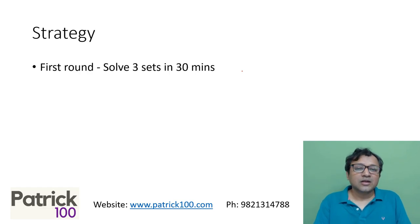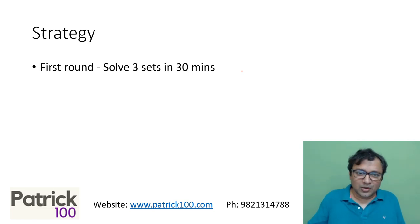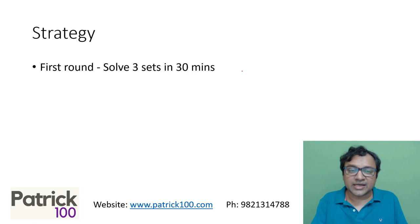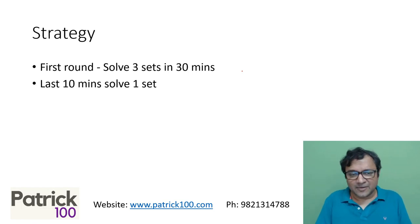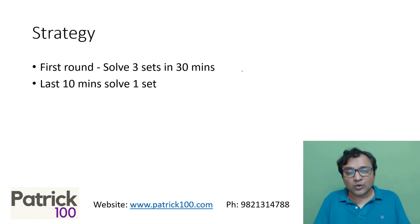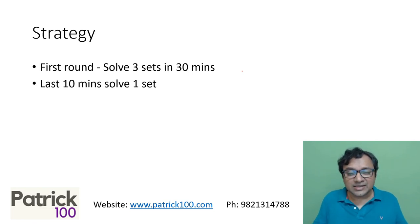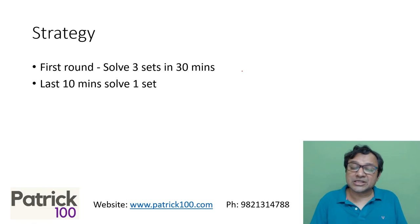Here is a strategy to get a hundred percentile. In the first round, go through all the sets and as you're reading, pick three easy sets and solve them. In the first 30 minutes, you'll have solved three sets. Having gone through all the sets, you'll know which remaining sets are solvable — go back and solve one more set in the last 10 minutes, ensuring you solve four sets in the given 40 minutes. The two key things: one, try to reduce the time to solve sets; two, don't get stressed while solving the paper. Stay relaxed and try to solve as much as possible, and it will definitely help you score well in the DILR section.